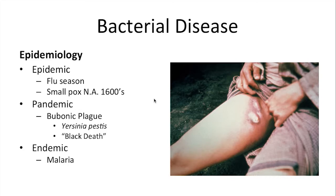Throughout history, the bubonic plague has caused pandemics multiple times. One of the first documented was about 541 to 750 AD, thought to wipe out about half the total population of Europe. Later, around 1350, it came to Europe again, and again in London around the 1600s. This was a disease actually carried by fleas, which were infecting rats and also biting people.